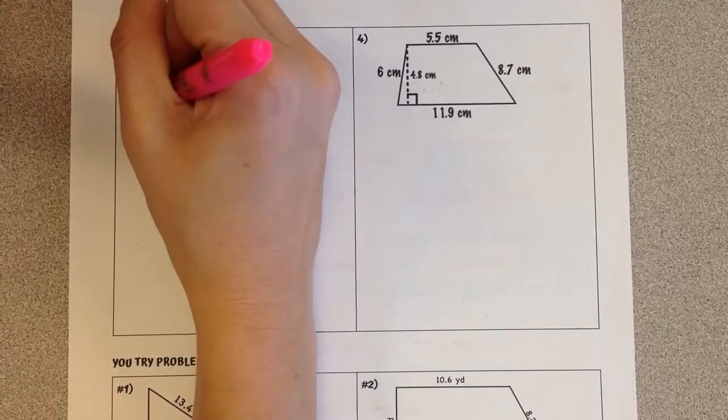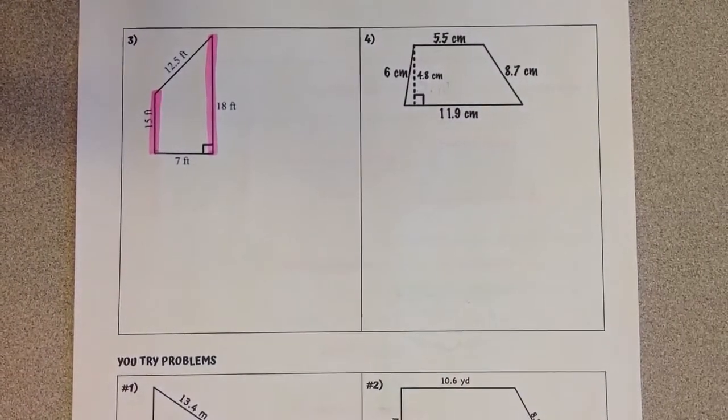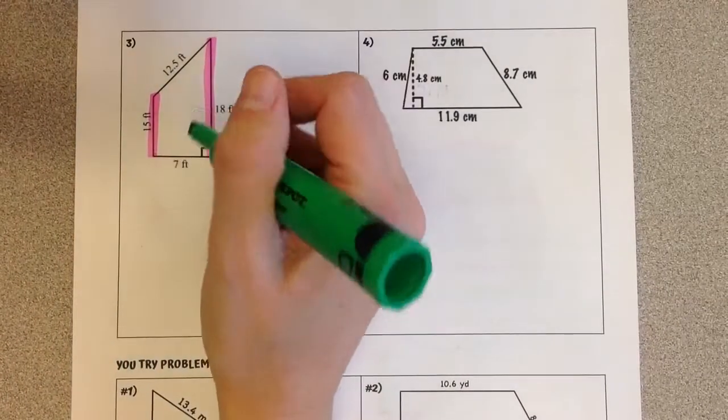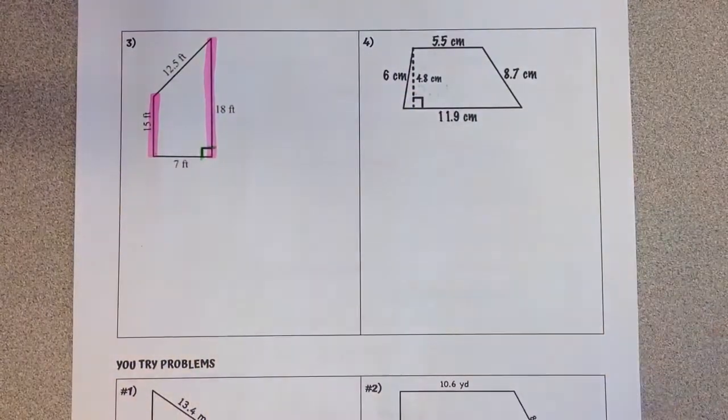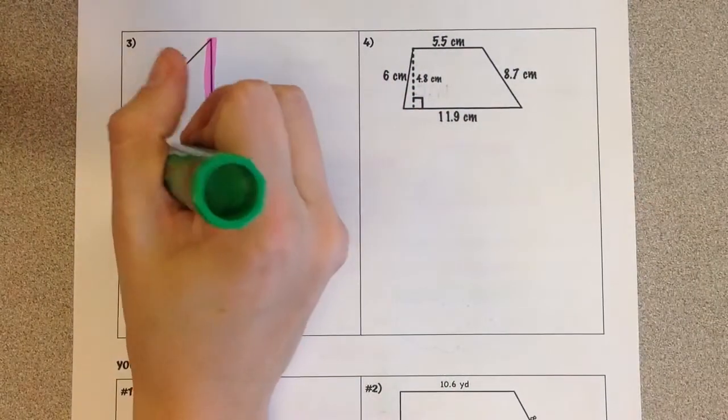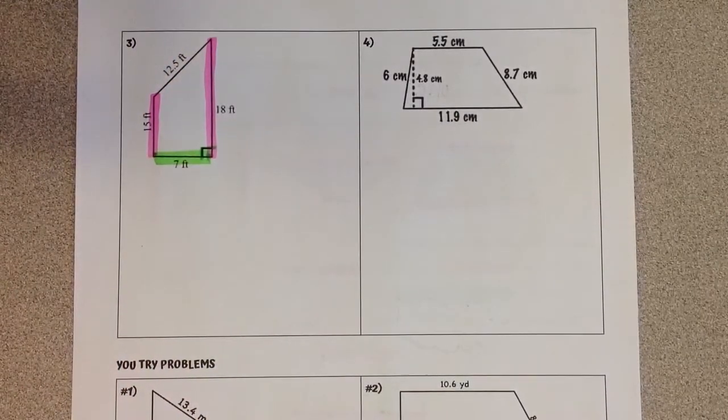So it's the right and left side here that are our parallel sides. Now we're looking for the perpendicular height. I don't see a dotted line, but I do see the 90 degree angle measure. What that means is that this side length is actually perpendicular, and that is going to be the height of our trapezoid.